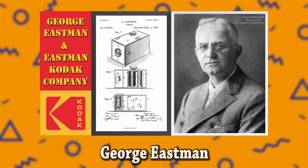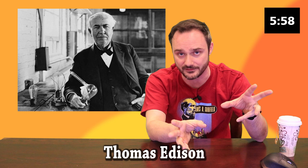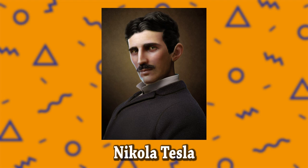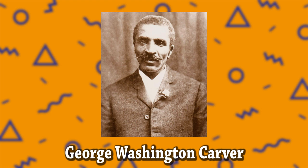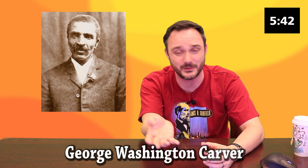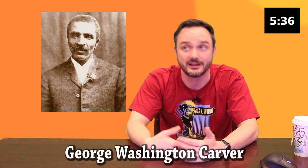Alexander Graham Bell invented the telephone. George Eastman's Kodak camera helped bring photography to the masses. Thomas Edison — the Wizard of Menlo Park — invented everything from the phonograph to the motion picture machine to the storage battery to the light bulb. In the War of the Currents, Nikola Tesla and his alternating current AC was notable — a real-life mad scientist. George Washington Carver developed countless uses for the peanut to help the South move away from a cotton economy that depleted the soil and kept people poor.